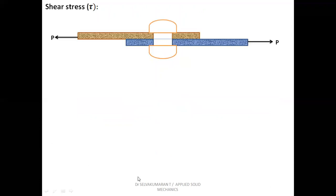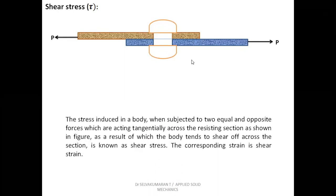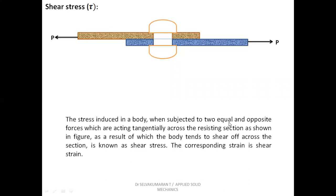Taking another example: two plates riveted together with two equal and opposite forces applied. When pulling on either side, the plates experience tangential forces across the section. The stress induced in a body when subjected to two equal and opposite forces acting tangentially across the resisting section, as a result of which the body tends to shear off across the section, is known as shear stress. The corresponding strain is shear strain.